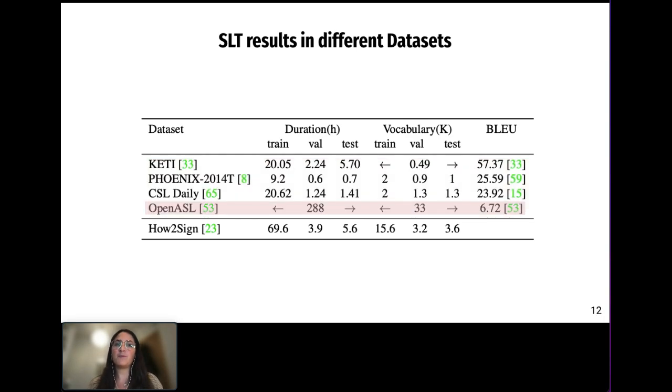Recently, bigger and more complex datasets such as OpenASL have been released, and this has translated into a drop of performance in translation. Our work aims at the more open domain of instructional videos across 10 different topics to set the first sign language translation baselines on the HowToSign dataset.